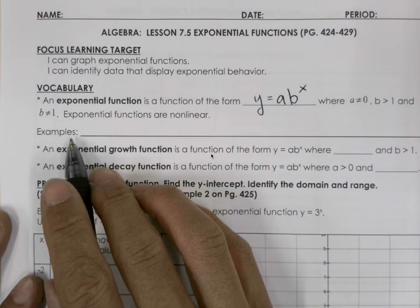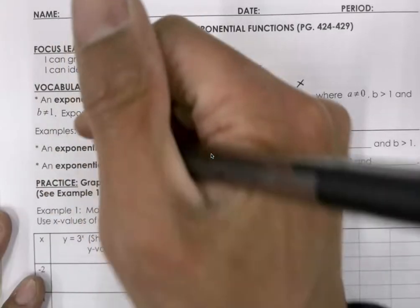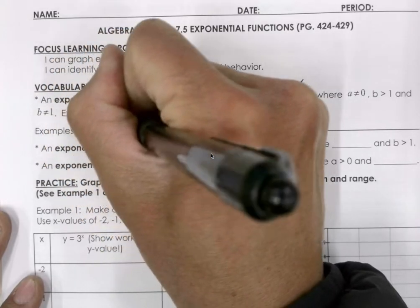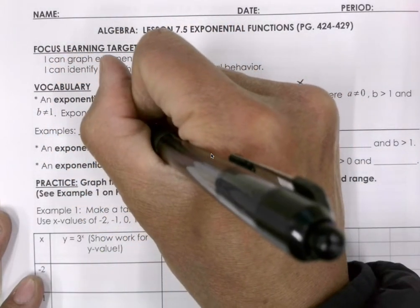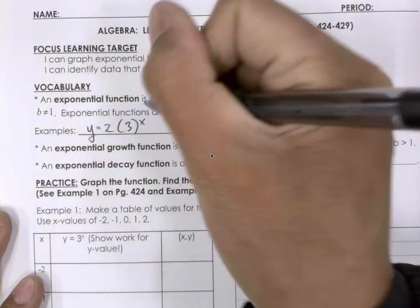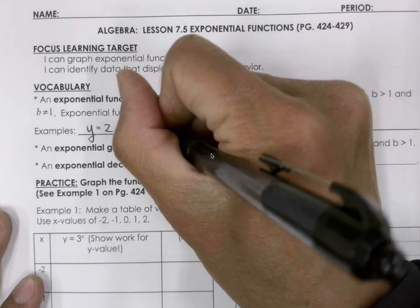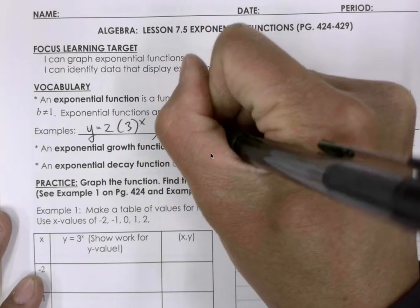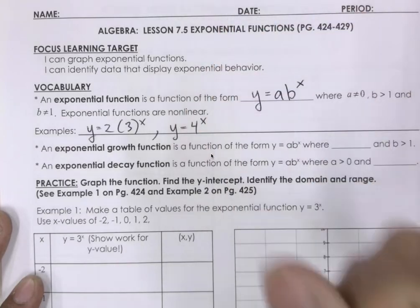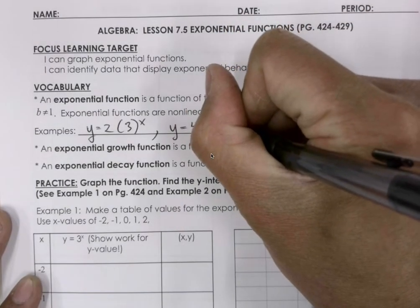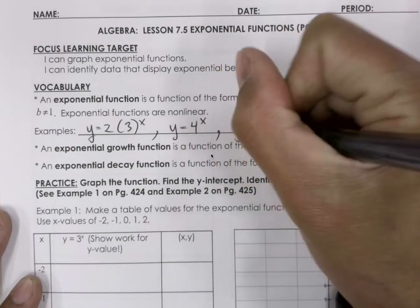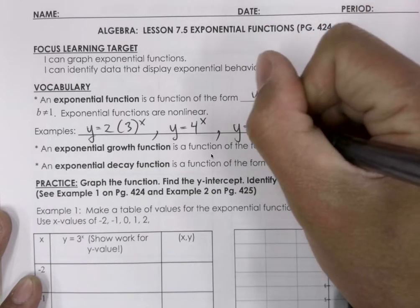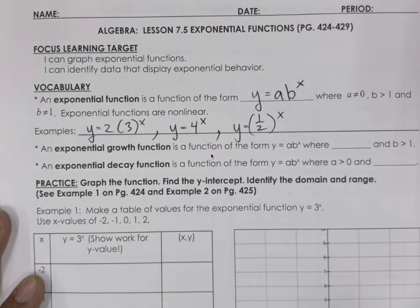Examples of exponential functions: y equals 2 times 3 to the power of x. Another example would be y equals 4 to the power of x. Another example is y equals one-half to the power of x.